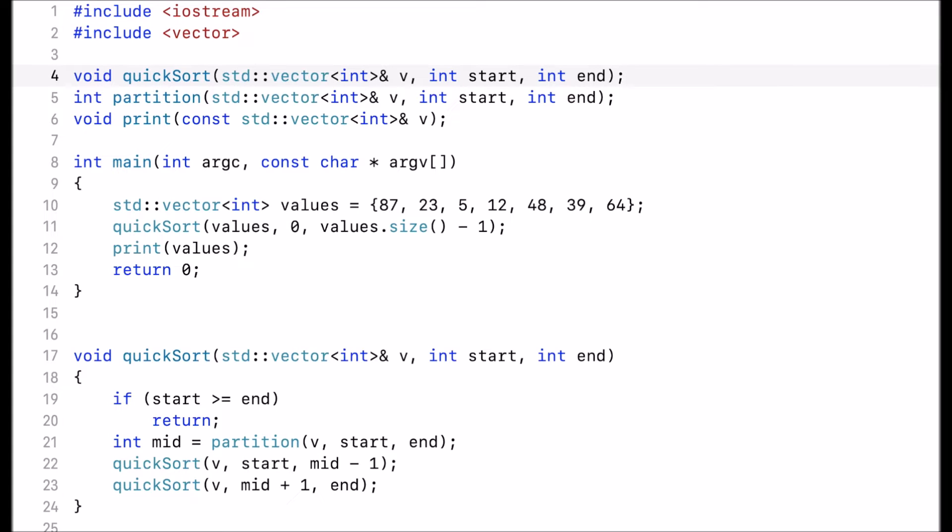Hi guys, in this video I'll explain how to implement quicksort. I have a quicksort function which expects a reference to a vector as well as a start and an end index, and a partition function which also expects a reference to a vector as well as a start and an end index.